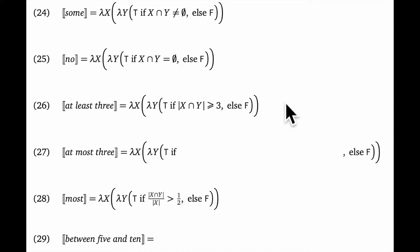I hope you're starting to see the framework. It's always lambda x, lambda y, and we're always returning one of the truth values. The only thing that changes is the core relation between the two set arguments. For at least three, we say that the cardinality of the intersection is at least three, which means we check whether there are at least three things that have both properties.